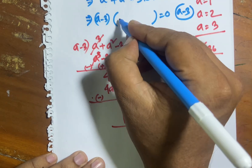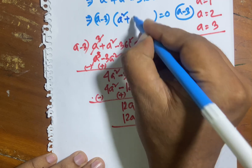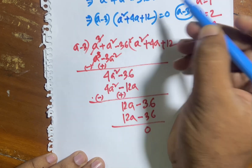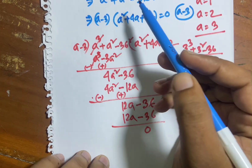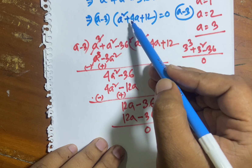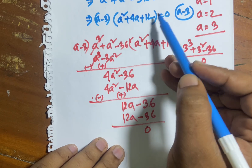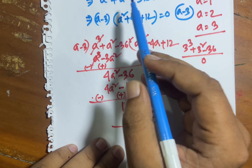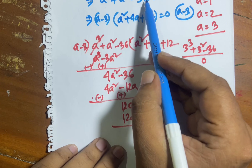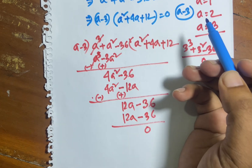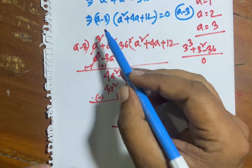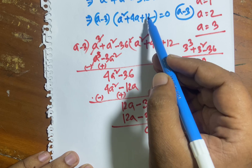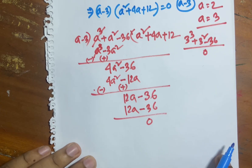The result is a squared plus 4a plus 12. So now I have (a minus 3) multiplied by (a squared plus 4a plus 12) equals 0. Therefore a equals 3, and I also need to solve a squared plus 4a plus 12 equals 0.